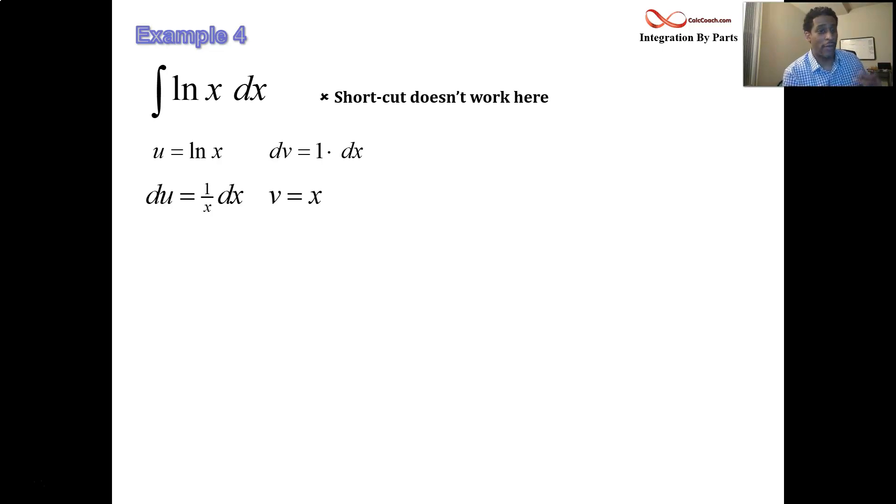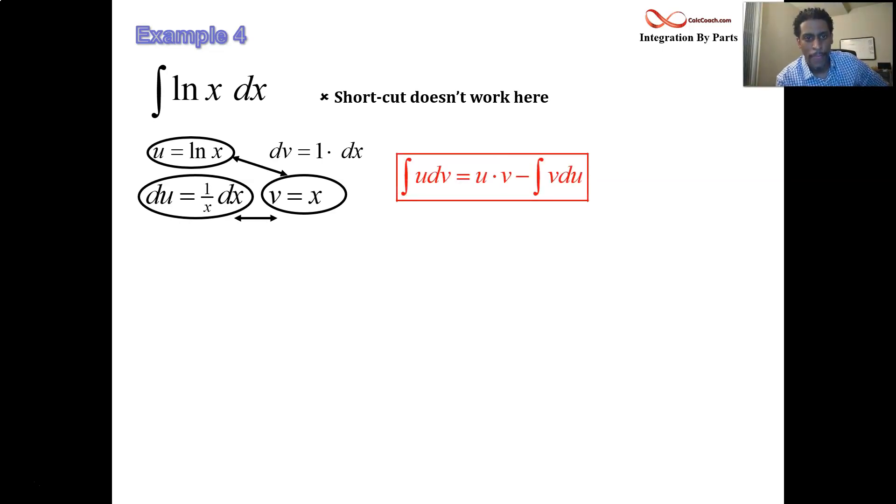Okay, all right, great. Now, the integration by parts formula is built off of having the product of u and v and subtracting the integral of the product of v and du. And so we'll have our integral now equal to x log x and then minus the integral of x times 1 over x dx.